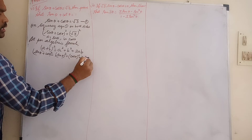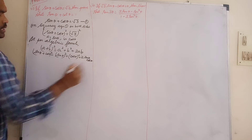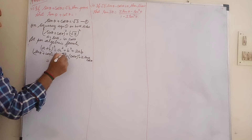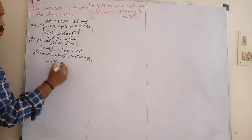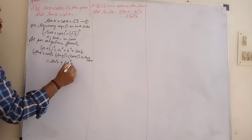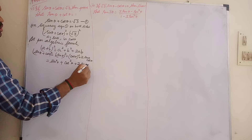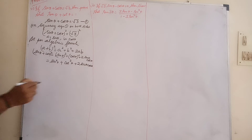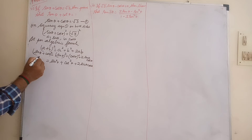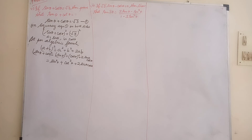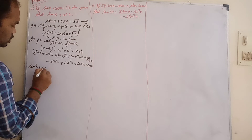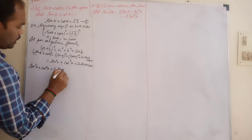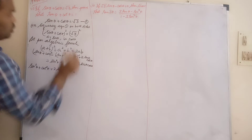Here a is sin θ and b is cos θ. sin θ whole square is sin²θ, cos θ whole square is cos²θ, plus 2ab which is 2·sin θ·cos θ. So we get sin²θ + cos²θ + 2·sin θ·cos θ.